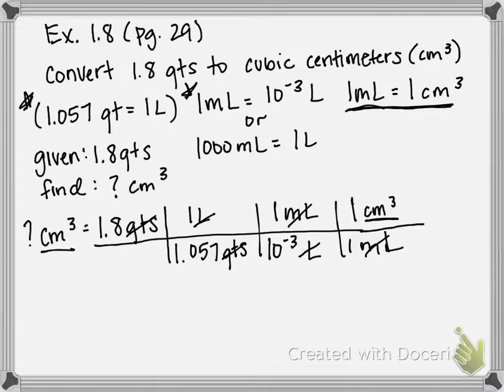It should work out every time that the units you don't want cancel. If that doesn't happen, then you've probably gone wrong somewhere or flipped something. It's not a big deal, just double check yourself and make sure that everything cancels that you don't want.